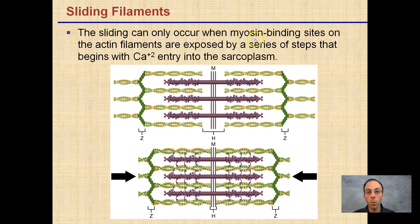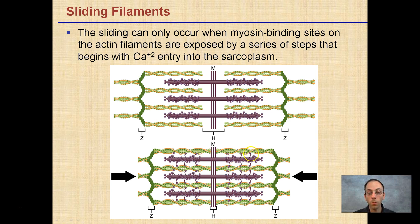The sliding can only occur when myosin binding sites on the actin filaments are exposed by a series of steps that begins with calcium ions entering the sarcoplasm. In the contracted phase we can see these small myosin binding sites now exposed, and in order for this to occur it all has to be initiated with calcium ions.